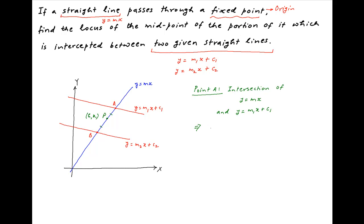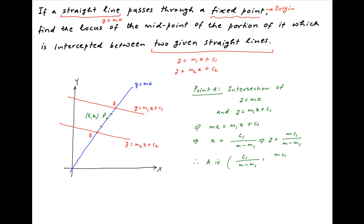Equating the value of y from both equations, we get mx equals m1x plus c1, which implies that x equals c1 upon (m minus m1), and therefore y, which equals mx, equals m times c1 upon (m minus m1). Therefore the coordinates of point A are (c1 upon (m minus m1), mc1 upon (m minus m1)).